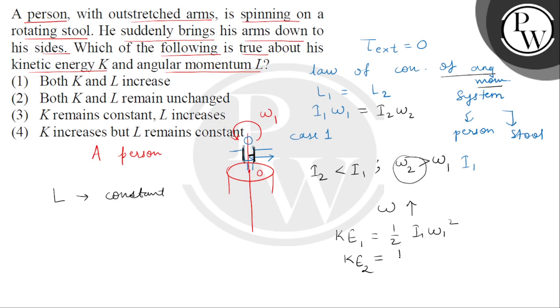this will be half I2 omega 2 square. So bachow, from here we can see that kinetic energy can be expressed like this: half I1 omega 1 times I omega 1. And what will kinetic energy 2 be? Half I2 omega 2 times omega 2. So if we carefully observe the right side, the product of these three quantities is constant because angular momentum is constant.